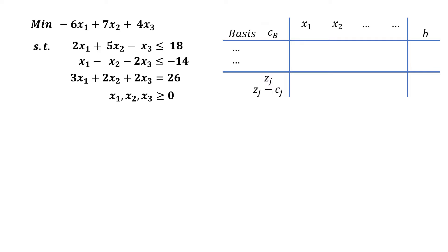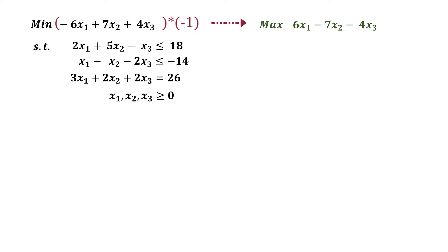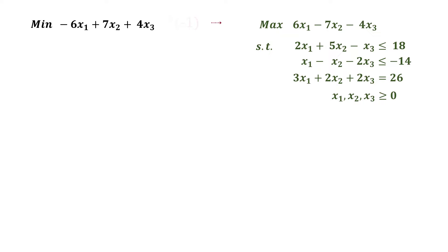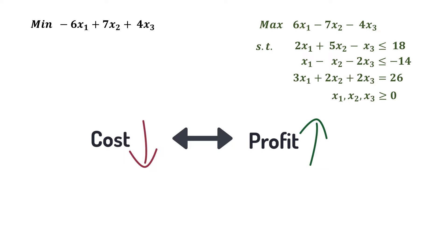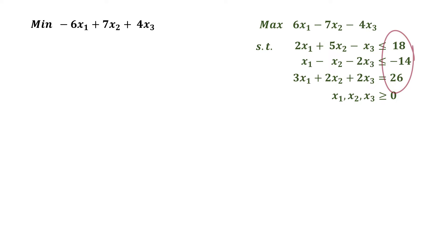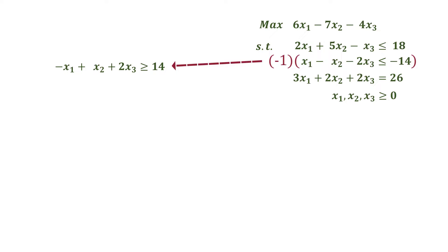We will be working with this maximization objective, and the constraints will remain the same. The idea is that making cost as small as possible is equivalent to making profit as large as possible. We multiply the second constraint by negative 1 to make its right-hand side positive, which also changes the direction of the inequality from less than to greater than. The original minimization problem is now equivalent to this maximization one.